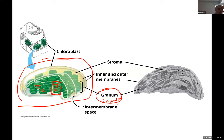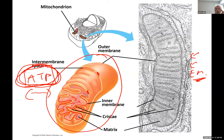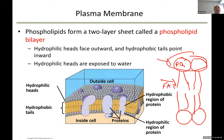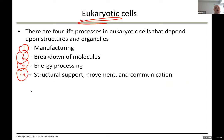These thylakoids and grana are found in a fluid inside the chloroplast, similar to the matrix in mitochondria. This fluid is called the stroma. The stroma contains all the chemicals and enzymes required by the chloroplast to produce chemical energy.